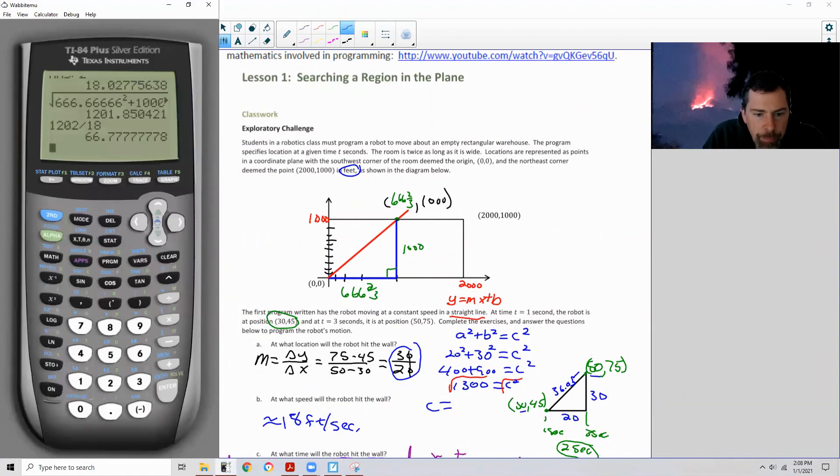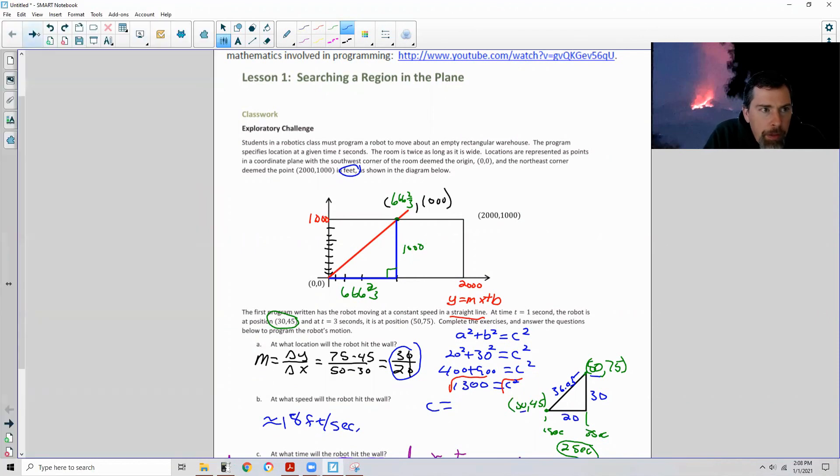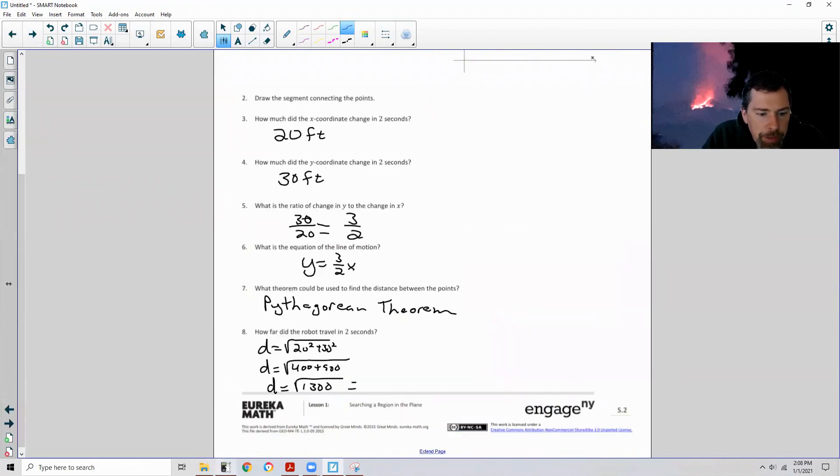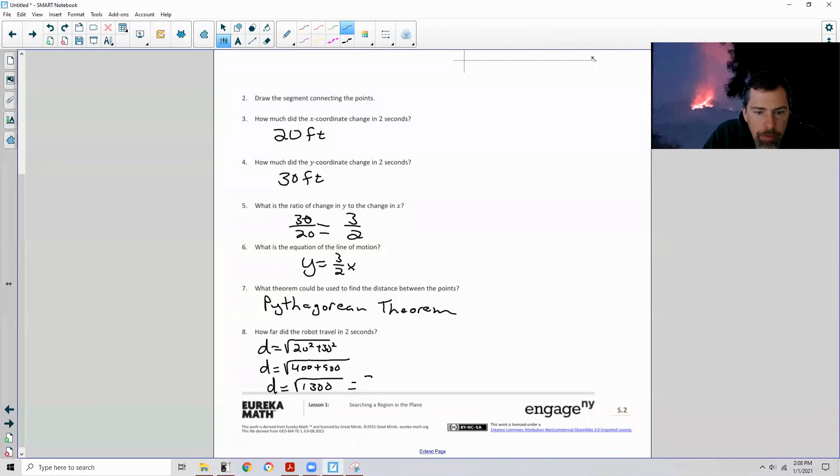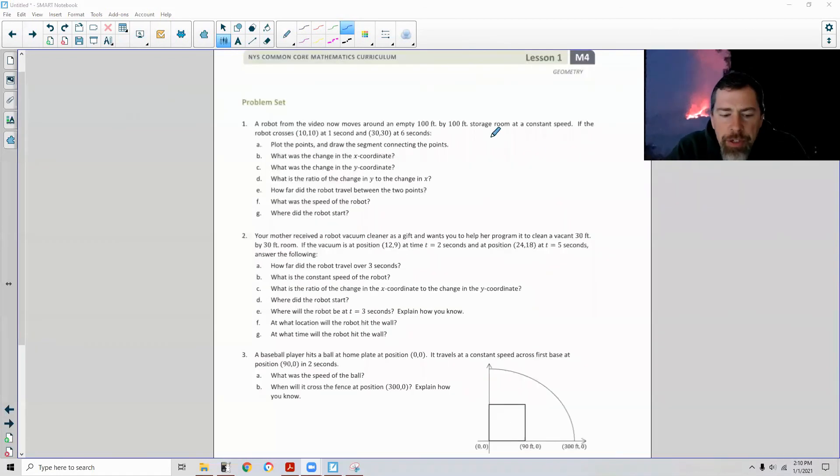The square root of 1,300, if I go back to this page, it was approximately 36.05. Let's do that. The square root of 1,300 is 36.05 feet. So that's just a quick review of Pythagorean theorem, the equation of a line, slope and all of that. So it's all an algebra one review in this lesson. Page three brings us to the end of a very short lesson one. Go to your problem set.